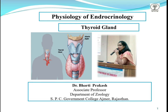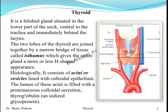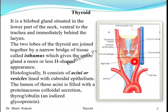The thyroid is a bi-lobed organ, as we can see here in the diagram. It is situated on the lower part of the neck, ventral to the trachea and immediately behind the larynx. It has two lobes which are joined together by a narrow bridge known as the isthmus. This gives the gland the appearance of the letter H, and it also looks like a butterfly.